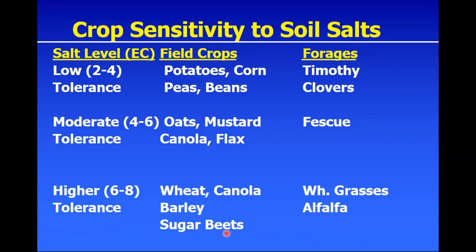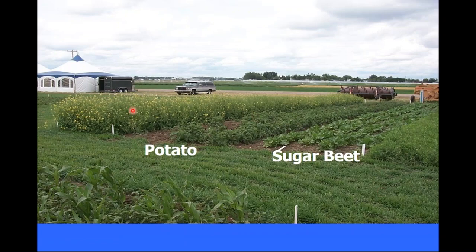In the diagnostic field school strip, EC of two marked the beginning of the saline area and crop growth was not bad, but very quickly as you moved from four to eight it dropped off, with virtually no production at an EC of eight. Different crops have different levels of sensitivity: special crops like potatoes and corn have low salt tolerance; pulse crops like peas and beans don't have great tolerance; cereal crops tend to be a bit better; wheat and barley typically have the best tolerance of our annual crops; but hybrid canola actually has quite good tolerance as well.